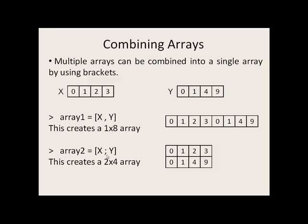If we used a semicolon instead of a comma, we would create a 2 by 4 array where the first row has the values of x, the second row has the values of y.